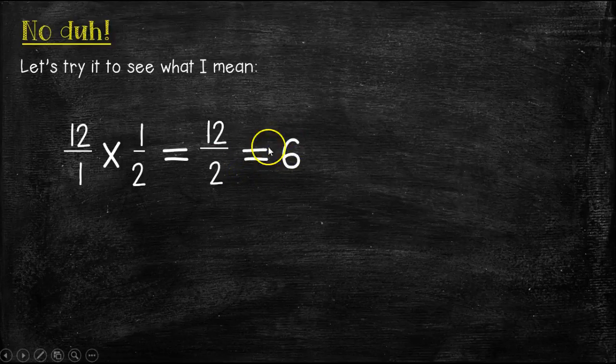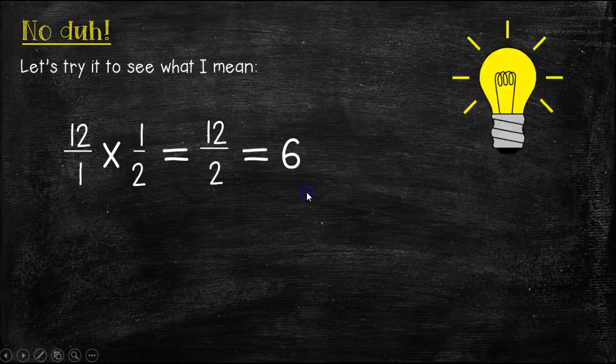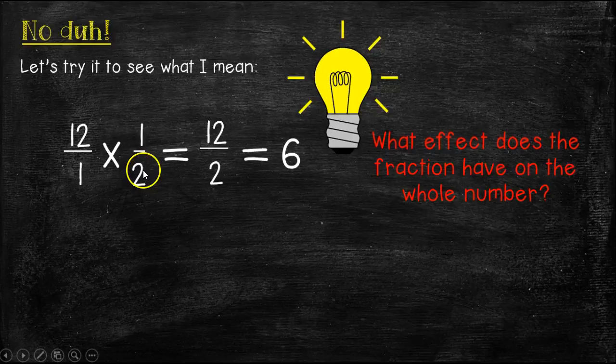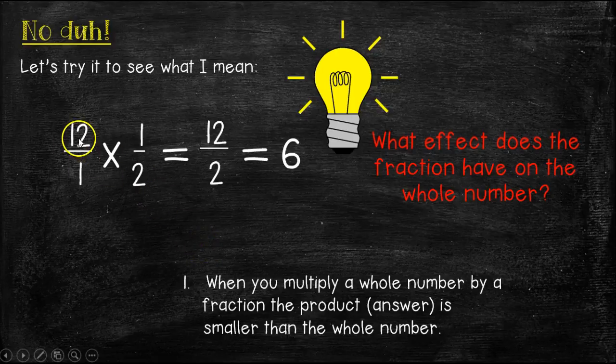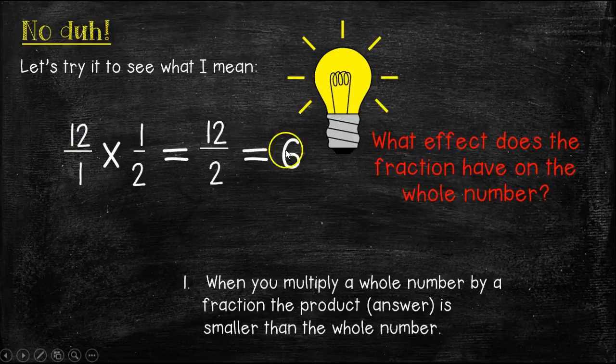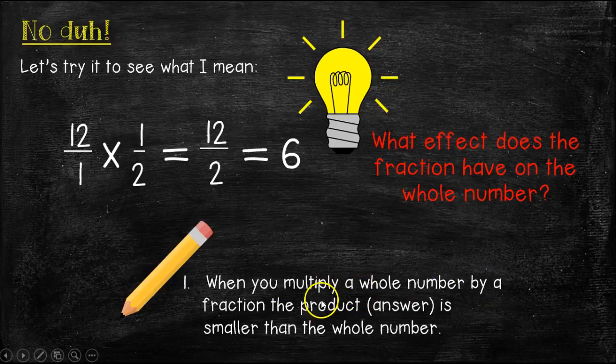So, look what I'm talking about. Here, our original whole number was 12, and here our product was 6. So, what effect does the fraction, multiplying by the fraction, have on the whole number? Well, when you multiply a whole number, like the 12, by a fraction, in this case, 1/2, the product, or the answer, is always going to be smaller than that whole number. So, 12 is much greater than 6. 6, the product, is smaller than 12. Go ahead and write this down under your notes. When you multiply a whole number by a fraction, the product, or the answer, is smaller than the whole number.